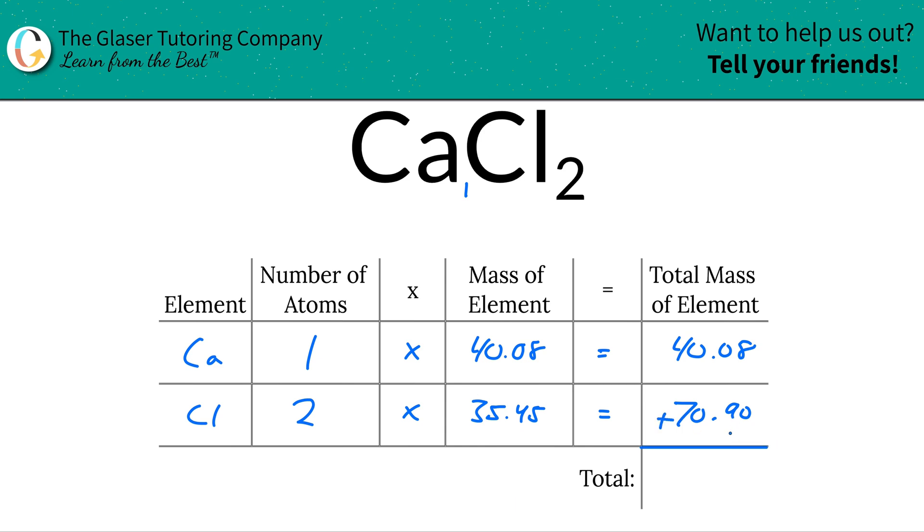Then to find the total, just simply sum this column together. Look at how nice and easy peasy that is, right? So this works out to be about 110.98. And since we're solving for molecular mass, the units here are in AMU, atomic mass units.